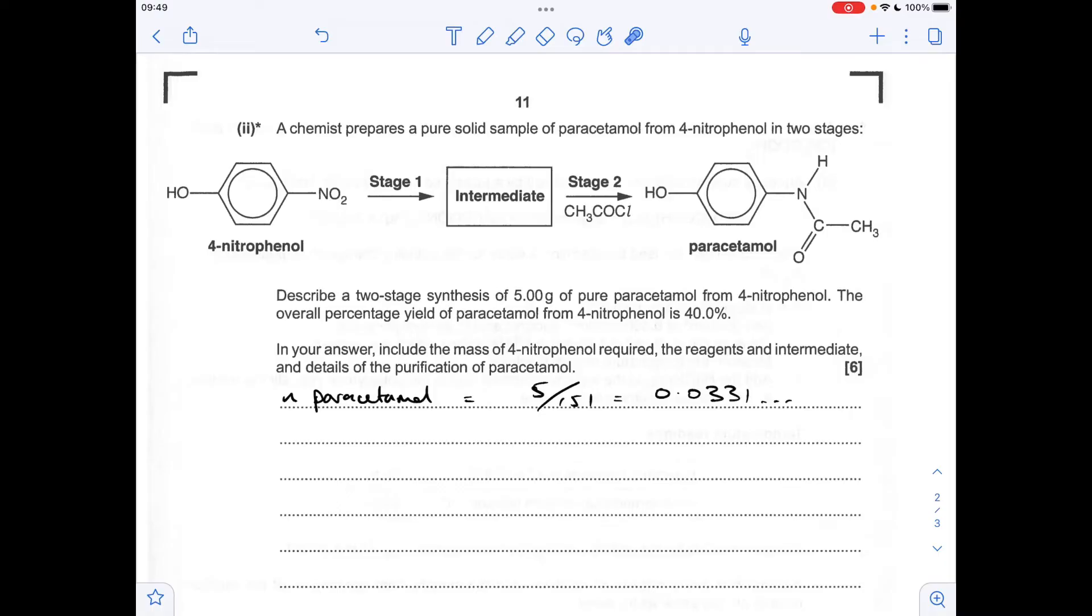So the next thing we need to do is work out the moles of 4-nitrophenol we're going to need, but we've got to factor in this 40% percentage yield. So it's a reverse percentage calculation. So if we think about the mole ratio first, it's a one-to-one ratio between 4-nitrophenol and paracetamol. So if it was 100% yield, we'd need that many moles of 4-nitrophenol, but it's only 40%. So we're going to divide by 40 and multiply by 100 to get the moles of this we're going to need.